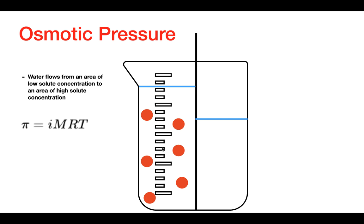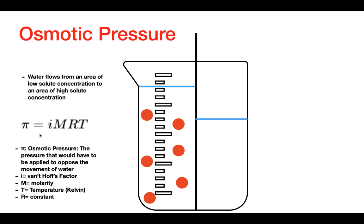This is the equation used to calculate osmotic pressure. Simply put, osmotic pressure is the pressure that would have to be applied in order to oppose the movement of water. We can calculate osmotic pressure with this equation, where π (pi) is the symbol for osmotic pressure.